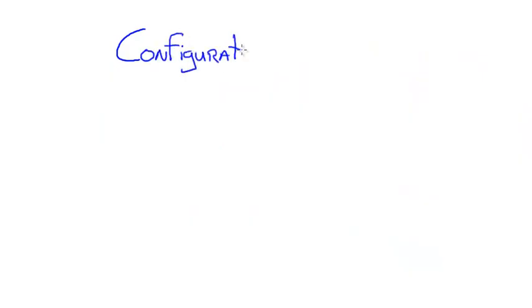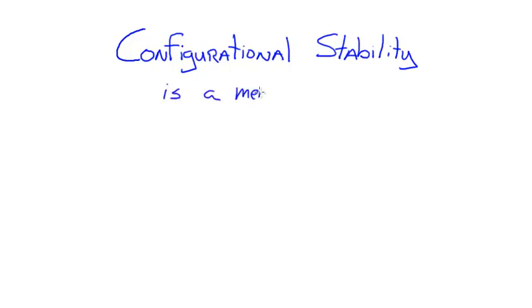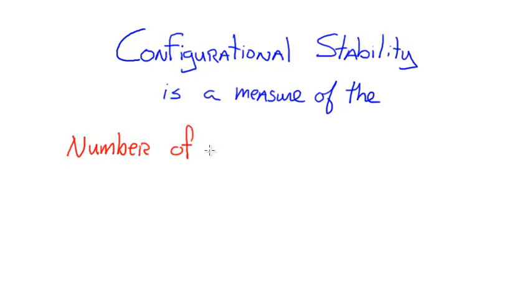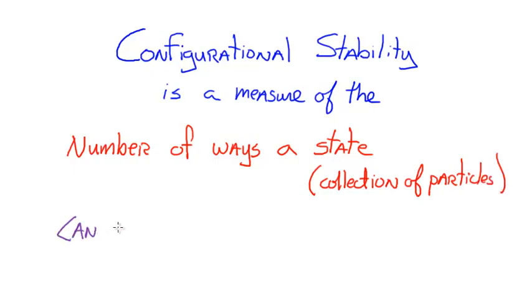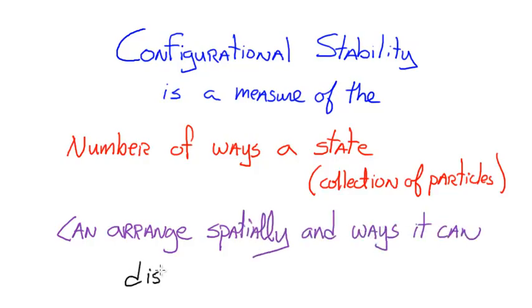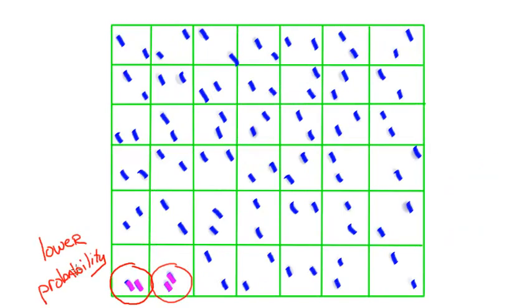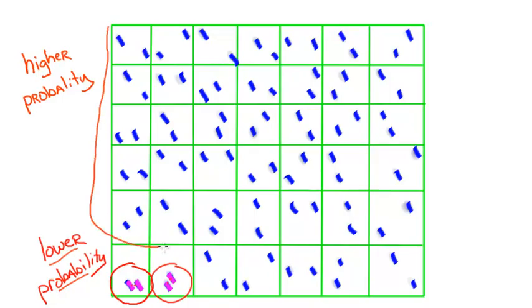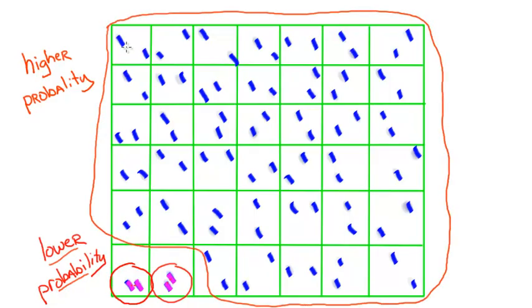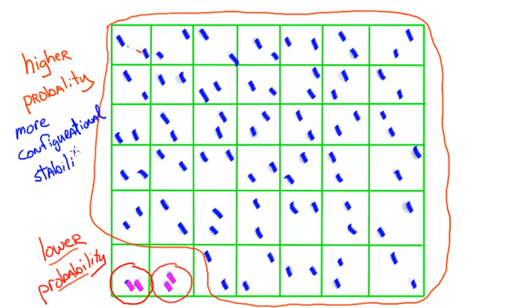The configurational stability of a state can be thought of as the number of ways particles adopt configurations in that state. The more ways the particles can arrange themselves — both spatially or energetically — the higher the configurational stability of that state. This really comes down to probability. If you have a large number of configurations that particles can adopt in a certain state, there's a higher probability of finding those particles in that state. For example, imagine a two-particle system where all these boxes represent the number of ways particles could arrange themselves spatially. Of all possible configurations, there are only two where the particles are very close, so there's a very low probability of finding them in that state compared to the other state where particles are further apart.